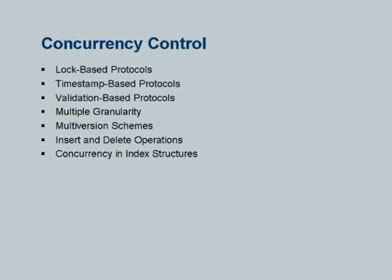The next topic is concurrency control. As we discussed earlier, concurrency control goals could be to ensure serializability, or it could be to ensure some weaker form of serializability which a particular application may be happy with. Locking is the traditional way, but there are many variants. We will look at multiversion schemes on which snapshot isolation is based, and also briefly at snapshot isolation. There are other topics in this chapter we won't cover here, including concurrency in index structures.